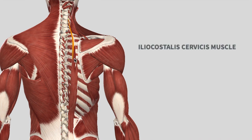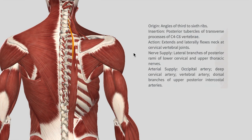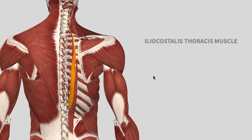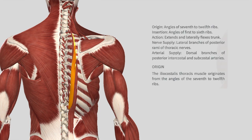More towards the lateral side, closer to the shoulder girdle, we have iliocostalis. So 'ilio' meaning it starts from the ilium. We have iliocostalis cervicis with origin at C4 to C6 vertebrae, and the action is mainly to extend and laterally flex the neck and cervical vertebral joints. We also have iliocostalis thoracis and then iliocostalis lumborum which is slightly below the thoracis.